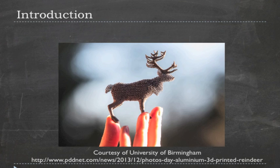Why am I so interested in the selective laser melting process? Here, courtesy of the University of Birmingham, they 3D printed a deer. It has solid legs, a mesh-like geometry for the body, and solid antlers. You can see that the SLM method allows the creation of both dense and less dense material all in one object.